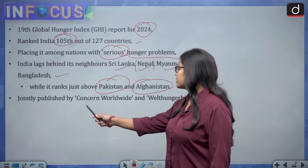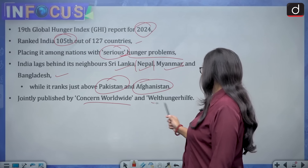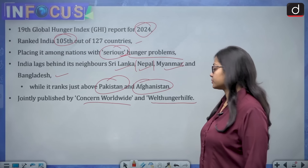The Global Hunger Index is jointly published by Concern Worldwide and Welthungerhilfe.